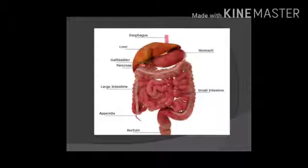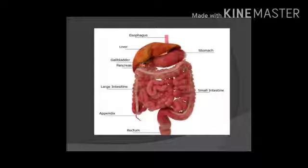You can see in the diagram: esophagus, stomach, then small intestine, and then large intestine. You can also see the gallbladder, liver, and pancreas.